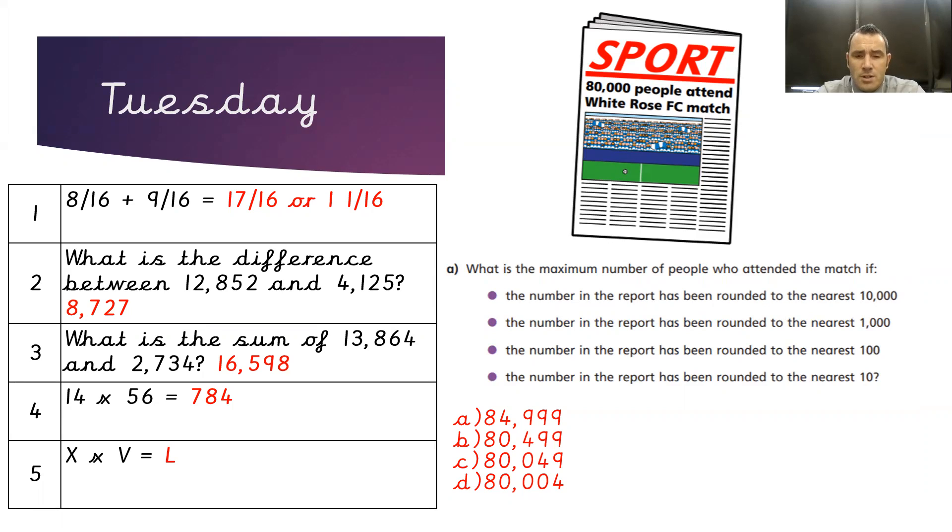We also know that any number four and below will round down, five and above always rounds up. So the biggest number it could possibly be will be 84,999.